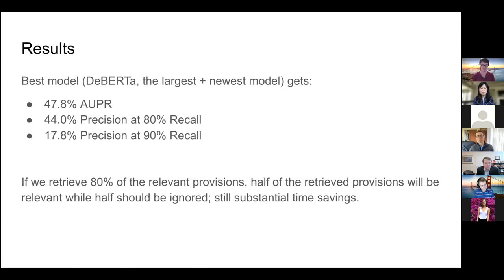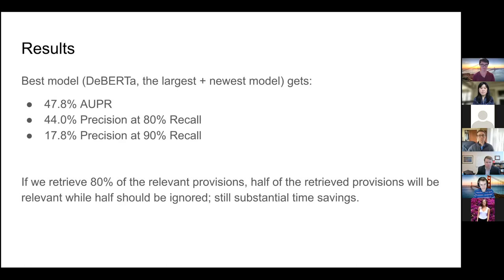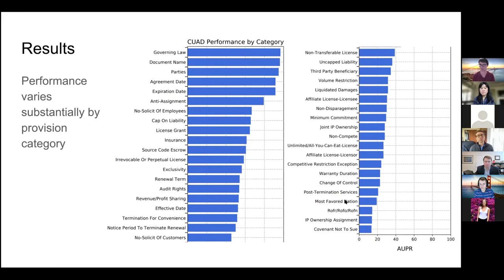We can also break performance down by the 41 different provision categories. Performance varies substantially across labels — some are extremely high, close to 100%, while others are much lower, below 20%. So these models are more reliable for some purposes than others. This is an important consideration when evaluating these models, and there is certainly work to be done on the lower-performing categories.